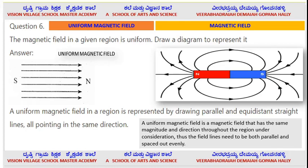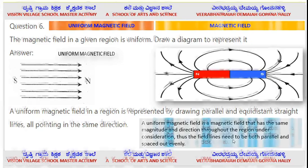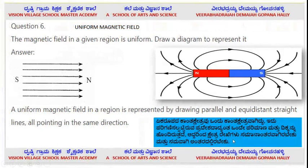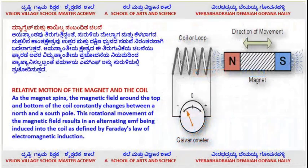Wonders of the magnet — there are so many things we have to study. A uniform magnetic field is a magnetic field that has the same magnitude and direction throughout the region under consideration. The field lines need to be both parallel and evenly spaced.